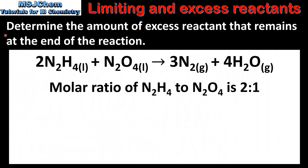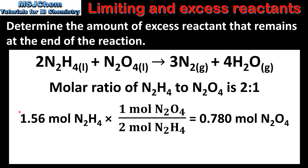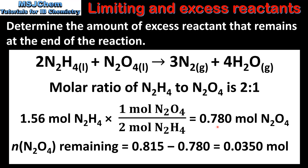The next step is to determine the amount of excess reactant that remains at the end of the reaction. To do this we need to look at the molar ratio of N2H4 to N2O4. From the balanced equation we can see the ratio is 2 to 1. We have 1.56 moles of our limiting reactant N2H4, and we multiply by 1 over 2 because of the molar ratio, giving us 0.780 moles of N2O4 that react completely. The final step is to subtract this from the original amount: 0.815 minus 0.780, which gives us 0.0350 moles of N2O4 remaining.